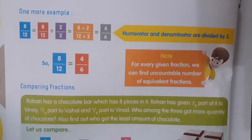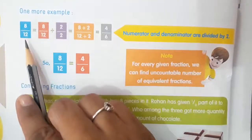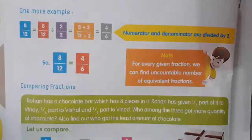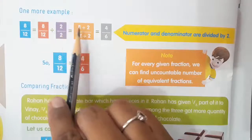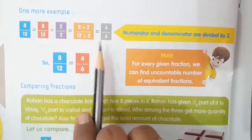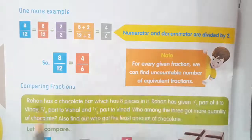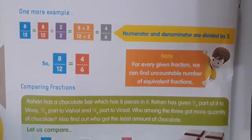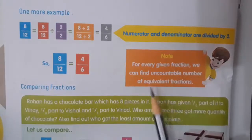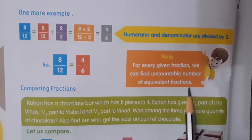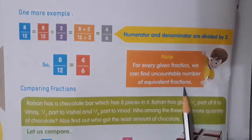See the next page. One more example: 8 by 12 is equal to 8 by 12 divided by 2 by 2. So the numerator and denominator are divided by 2. 8 divided by 2 is 4, and 12 divided by 2 is 6, giving 4 by 6. So 8 by 12 is equal to 4 by 6. For every given fraction we can find an uncountable number of equivalent fractions.